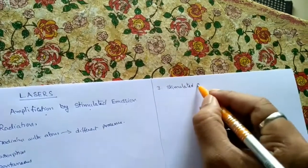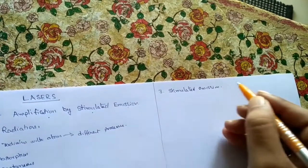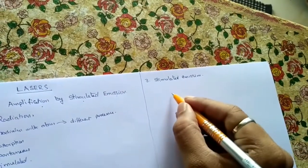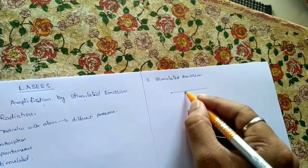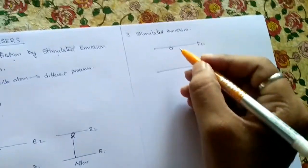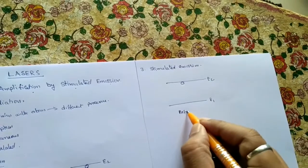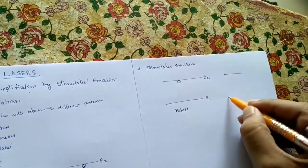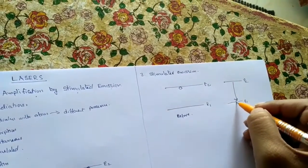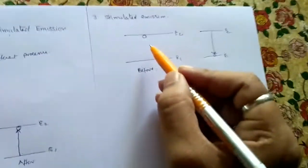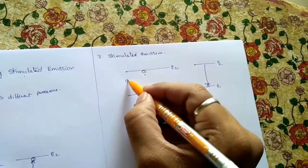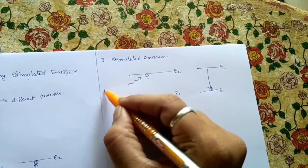The third process is stimulated emission. With energy levels E1 and E2, an atom is at the excited state. In the before condition, the atom is at the excited state; in the after condition, it returns to the ground state before its lifetime by absorbing an incoming photon of energy E2 minus E1 equals h-nu.